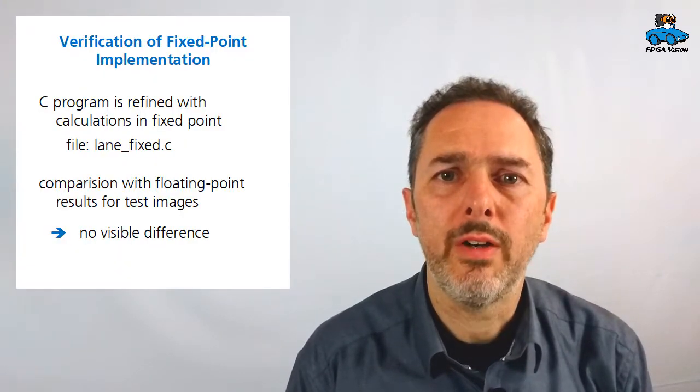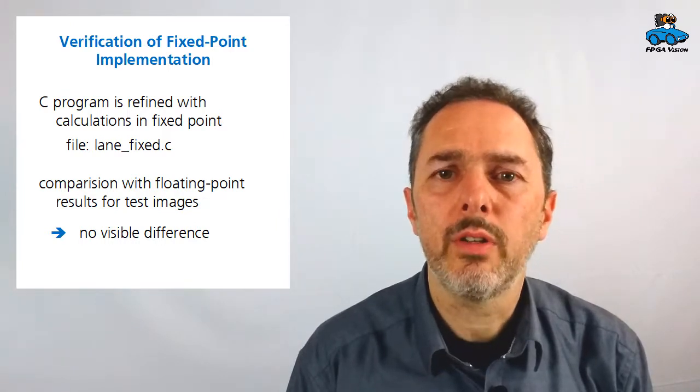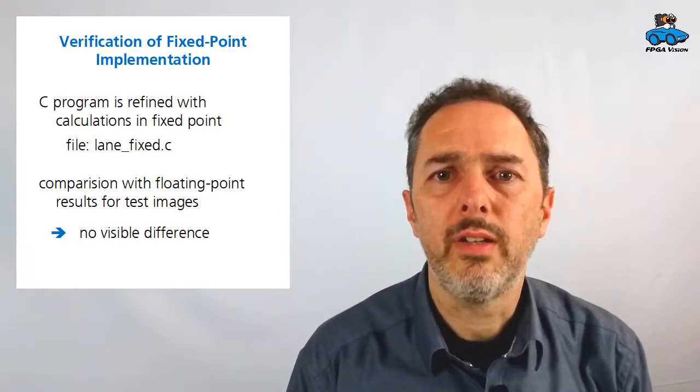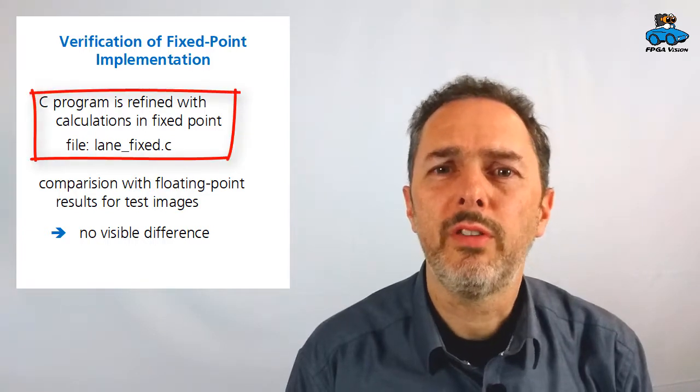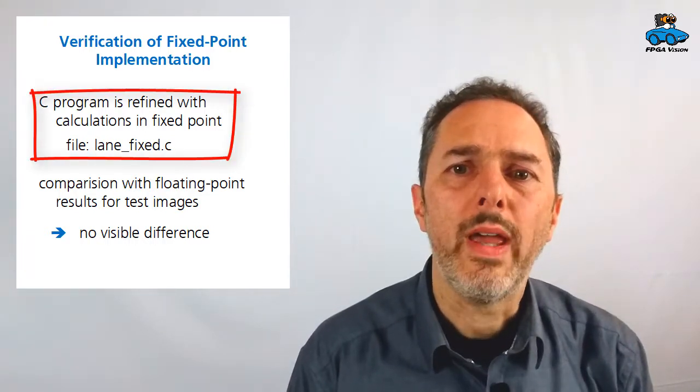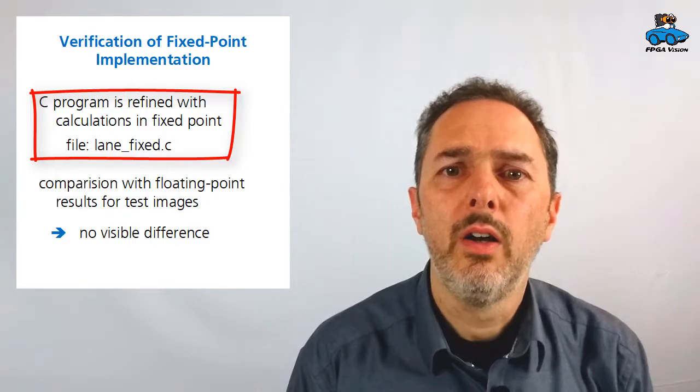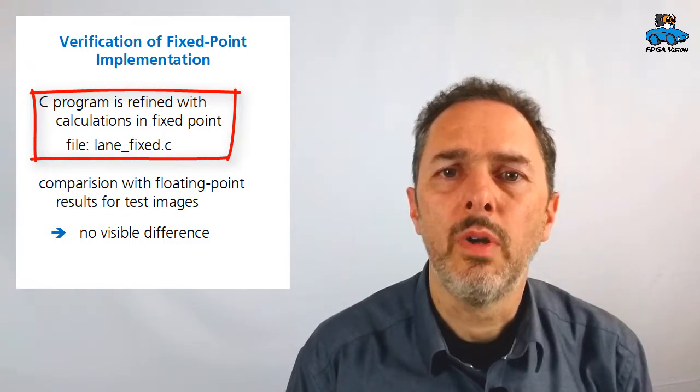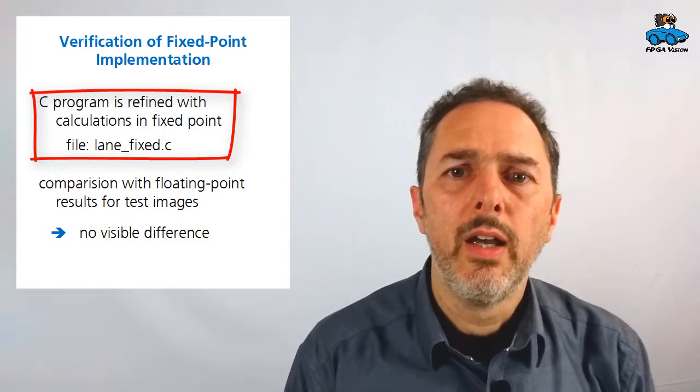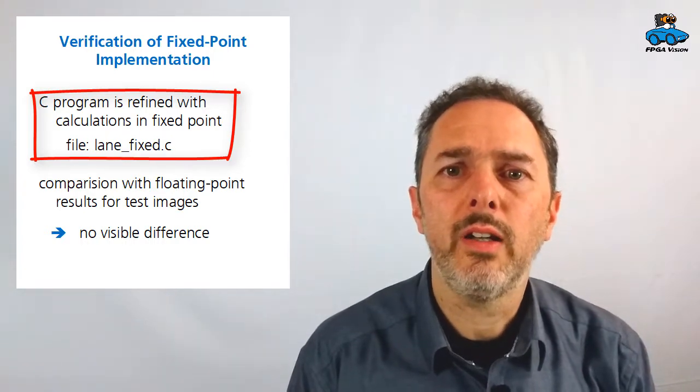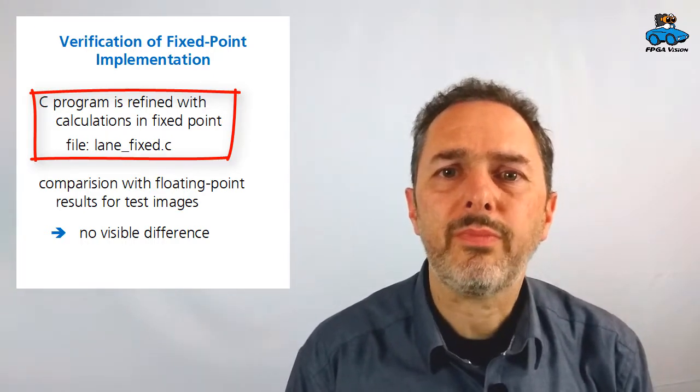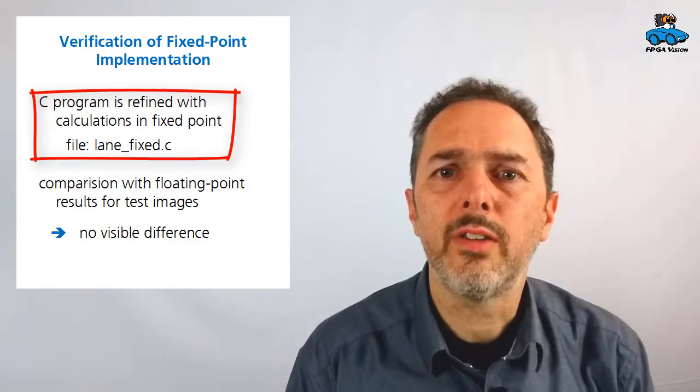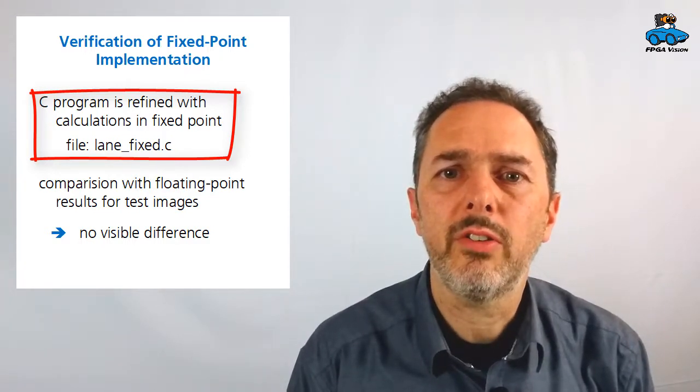With the conversion of the floating point calculations to fixed point, we have made changes to the algorithm. So, of course, we now have to verify, we have to check, if the algorithm still performs the operation that we intend to. And we do this again by a C simulation. We had in the previous video a C file for simulating the algorithm with floating point. And we now change this C file to fixed point. This file is given to you. It's named lane_fixed.c.